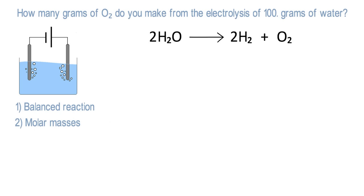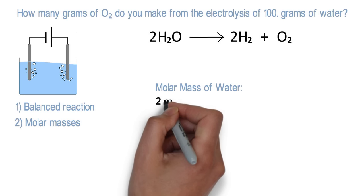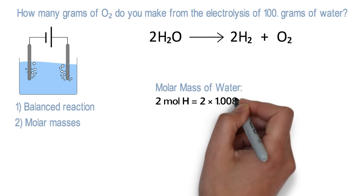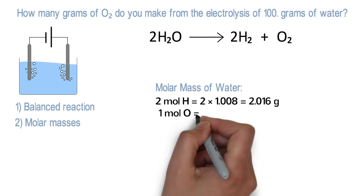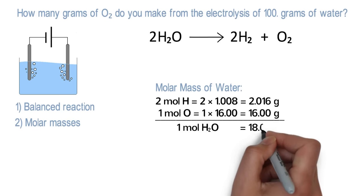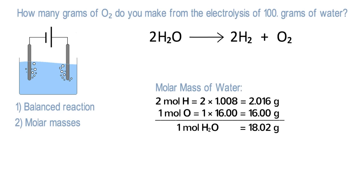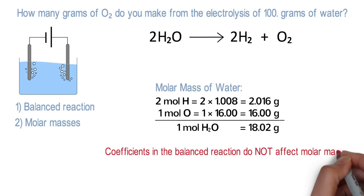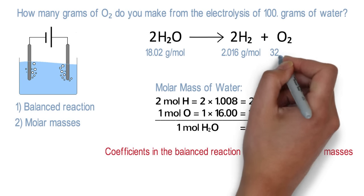Step 2: Calculate the molar masses of each chemical in the reaction. To calculate the molar mass of water, we add together the molar masses of all the atoms in water. Since there are 2 hydrogens in every water molecule, we multiply 2 times 1.008 to get 2.016. There is only one oxygen, so that is 1 times 16, which is 16. Add 2.016 and 16 to get a total molar mass of 18.02 grams per mole. Note that the coefficient 2 in front of H2O in the balanced equation does not affect the molar mass calculation. Hydrogen's molar mass is 2.016 grams per mole and oxygen's molar mass is 32 grams per mole.